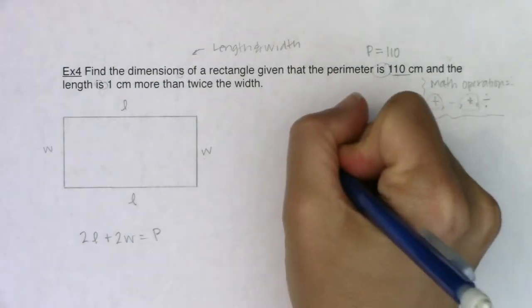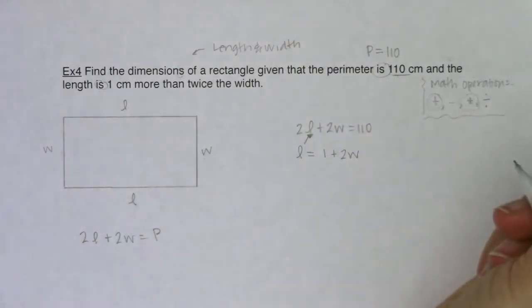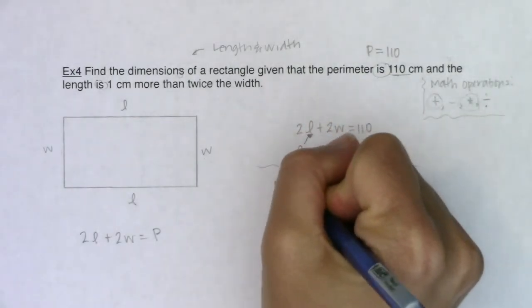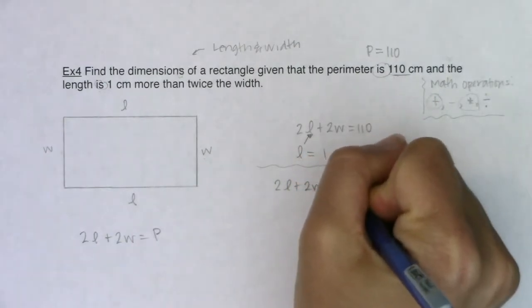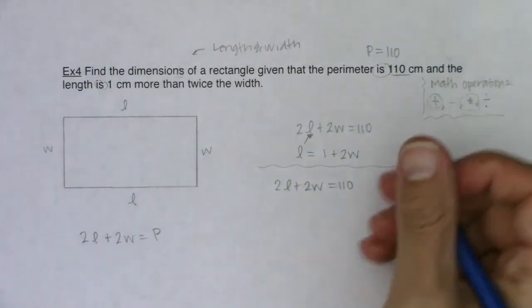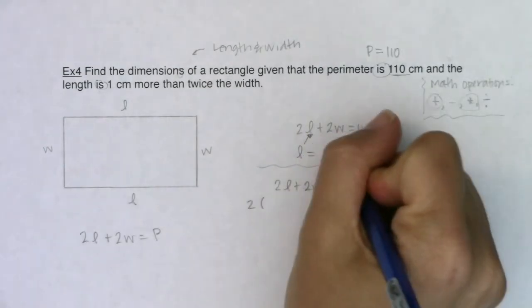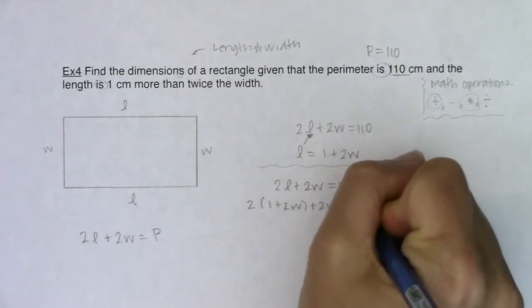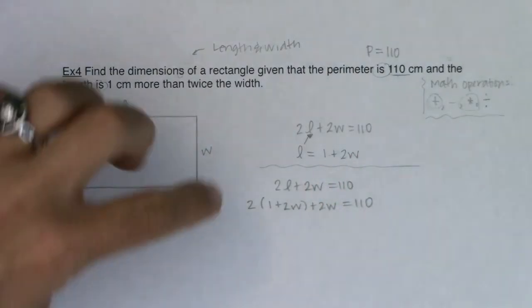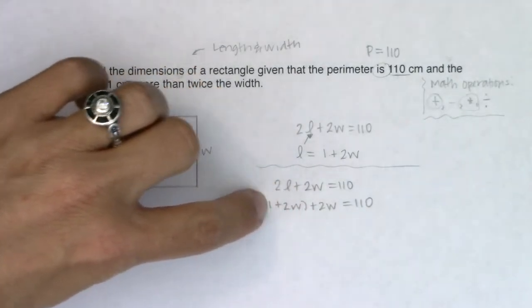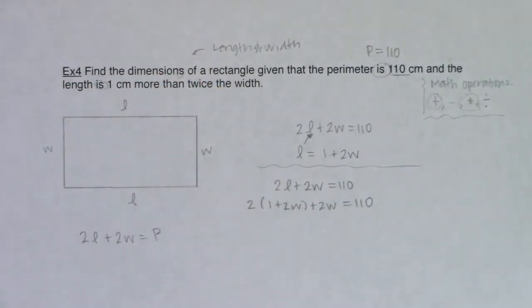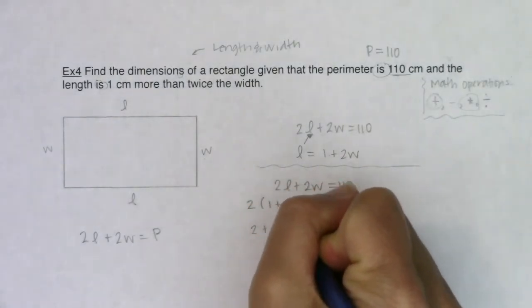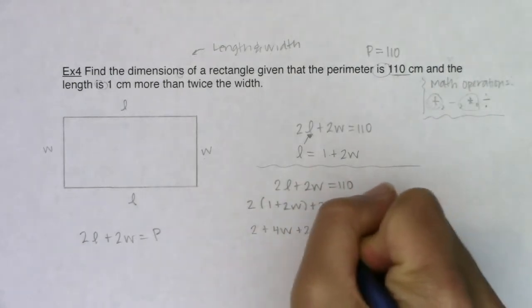If the length is equal to 1 plus 2W, I'm going to sub that in right there. So instead of 2L plus 2W equaling 110, I'm going to say 2 times this version of L, 1 plus 2W, plus another 2W is equal to 110. So instead of writing L, I'm going to write what it's equal to. It's a binomial, so I'm going to protect it with those parentheses. And now I'm going to distribute.